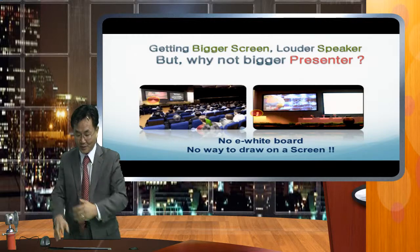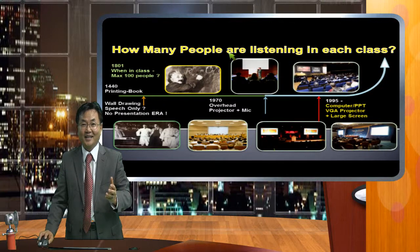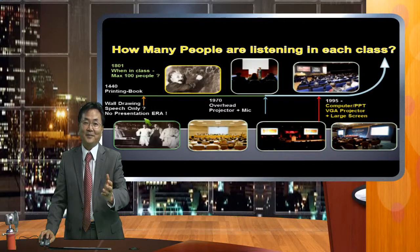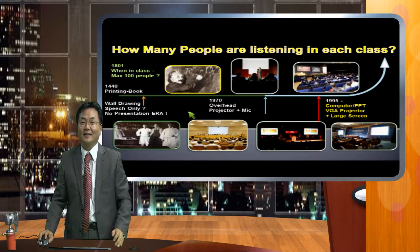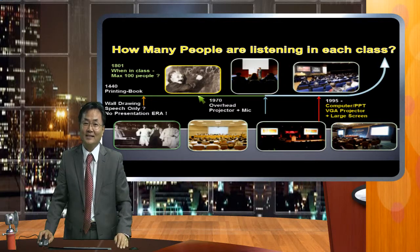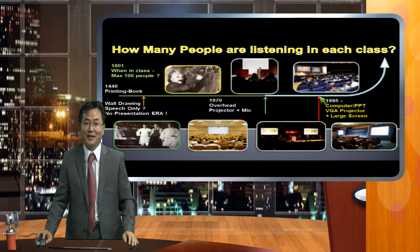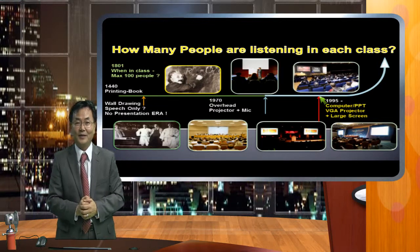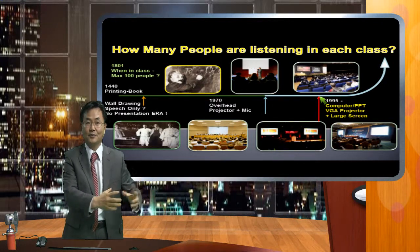When you have a large screen, the presenter's face becomes too small from one end to the other — this is a problem. We need some way to combine and record. The classroom has grown from 50 students with voice and whiteboard, to overhead projectors for 100-200 people, and now 400 to 1,000 people can watch. Some YouTube videos have a million people watching — that's the trend from classroom to smart world.